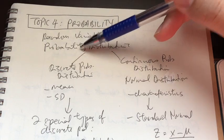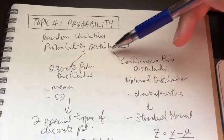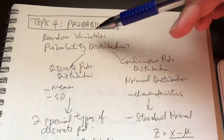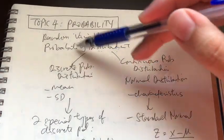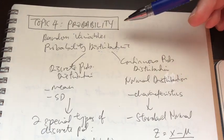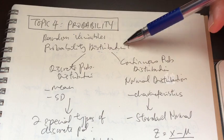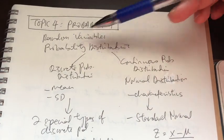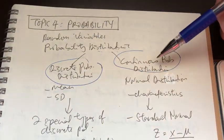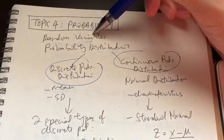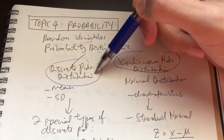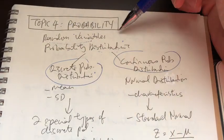Then we learned about the probability distribution concept. Probability distribution is basically a list of all of the random variables and their respective probabilities attached to each and every one of those outcomes or random variables. The probability distribution can be a discrete probability distribution or a continuous probability distribution. If the random variable is discrete in nature, the probability distribution is discrete; if it's continuous, the distribution is continuous.